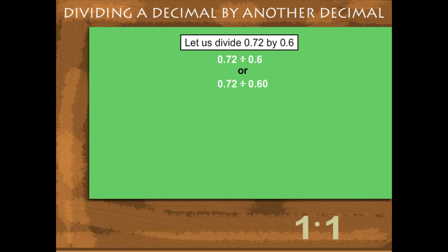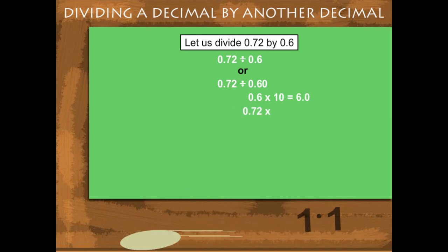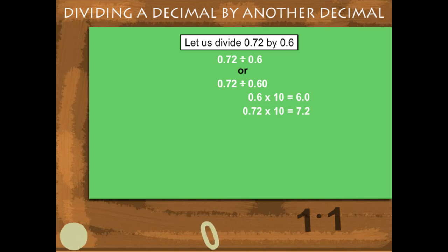Now, 0.6 multiplied by 10 is 6, and 0.72 multiplied by 10 becomes 7.2. Let's divide 7.2 by 6.